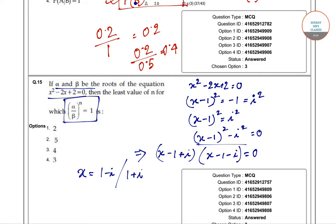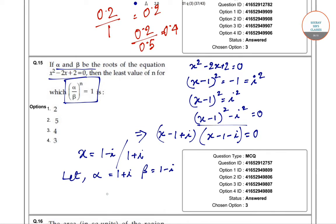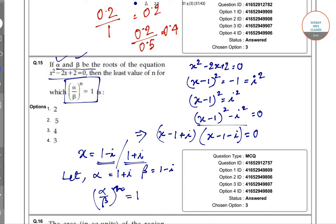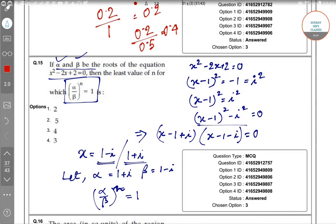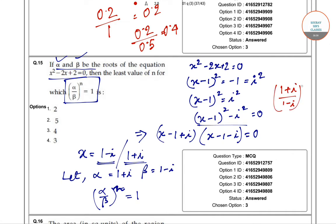So x can take two values: x = 1 - i or x = 1 + i. Let α = 1 + i and β = 1 - i, since α and β are the two roots of the equation. Now we need to evaluate (α/β)^n = 1, which is (1 + i)/(1 - i) raised to the power n equals 1.